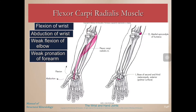Flexor carpi radialis does flexion of the wrist, and it's also going to do abduction or radial deviation of the wrist because it's on the radial side. It will also do weak pronation of the forearm, because its fibers kind of wrap around to this side. When they shorten, they're going to pull that radius this way.